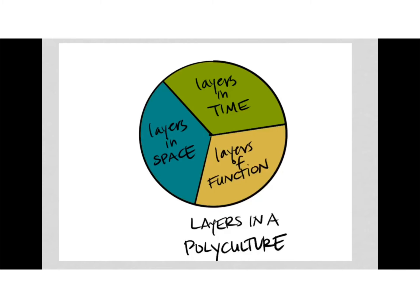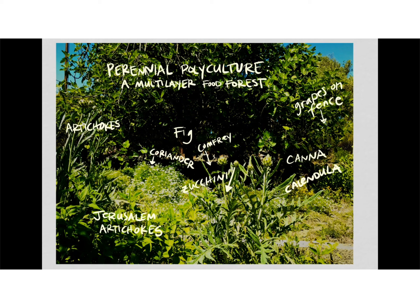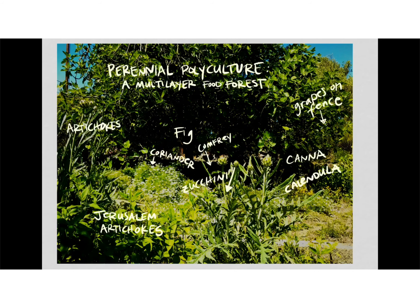How many different ways can you use plants? How many different functions are there for a plant? Layers in time: plants that succeed each other over time. Some are perennial and have their peak periods in the seasons, and when they're dormant, you can grow other things. Some plants die after a year or two, and you should have other plants coming up behind them. Layers in space: you've got your trees, your shrubs, your ground covers, and so on. In a multi-layer food forest, let's look at some photographs. In a multi-layer perennial polyculture, you'd have all of these layers happening at once — layers in time, layers in space, and layers of function.